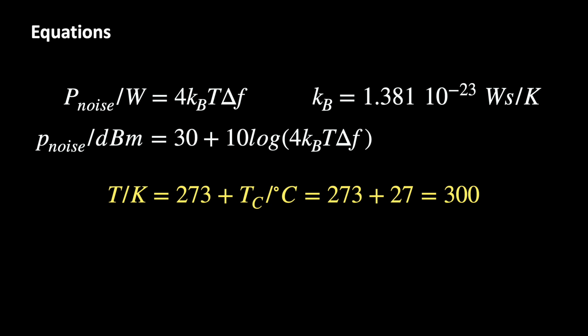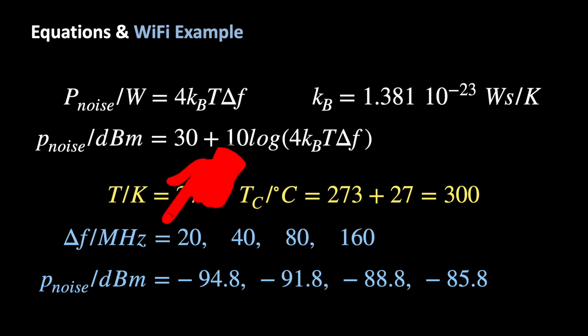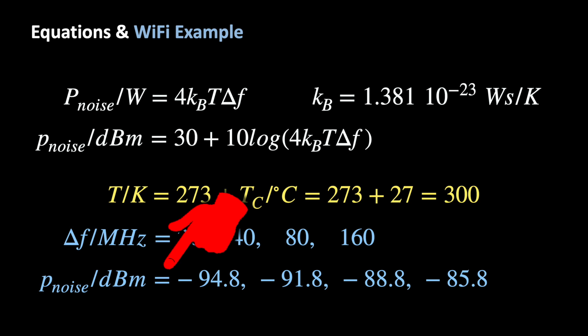Now coming back to our noise power. The temperature in our receiver shall be 27 degrees Celsius, which then corresponds to 273 plus 27 equals 300 degrees Kelvin. We take a Wi-Fi signal that can be transmitted with a bandwidth of 20, 40, 80 or 160 MHz. Therefore we calculate the noise powers for the different bandwidths.